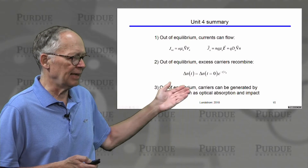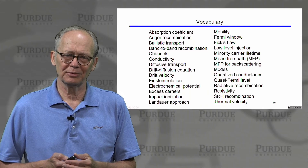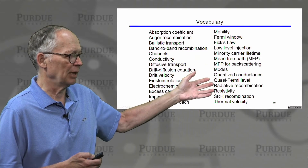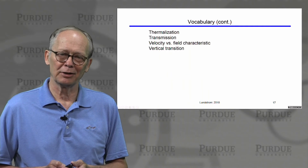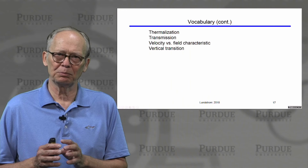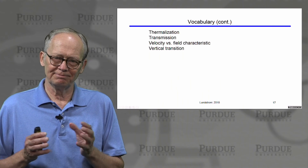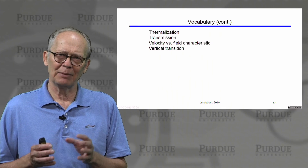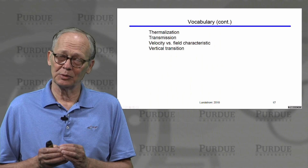The key concepts in Unit 4 are: out of equilibrium, current can flow, related fundamentally to the gradient of the quasi-Fermi level, which can be broken into drift and diffusion components. Excess carriers recombine with a characteristic lifetime, and carriers can also be generated by processes like optical absorption and impact ionization. These are the three main concepts to review. Unit 5 will put all of this together to describe the operation of virtually any semiconductor device.